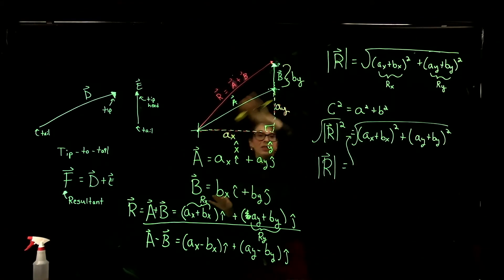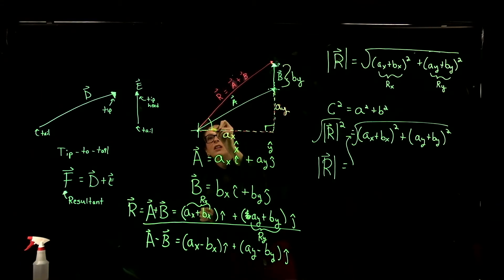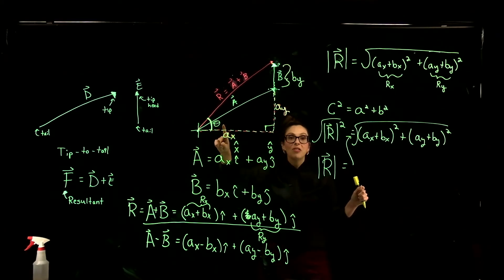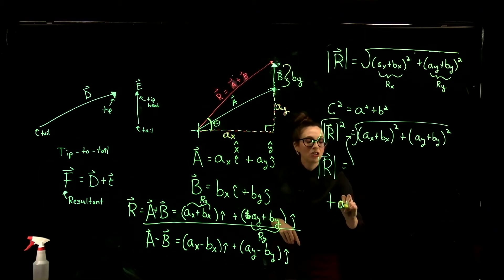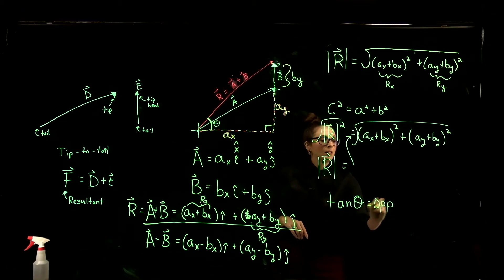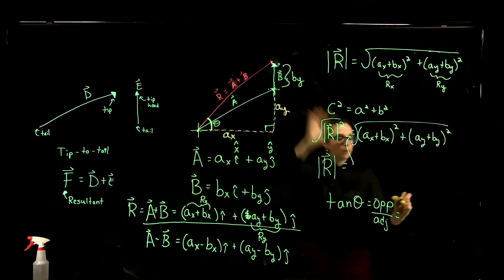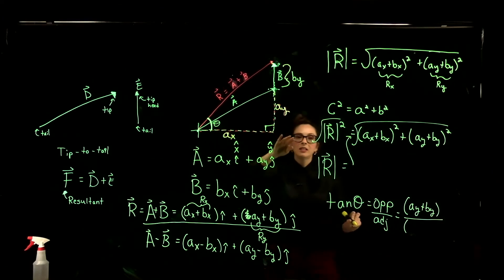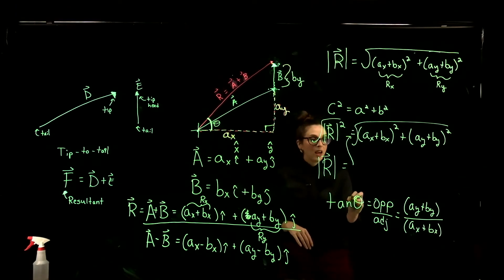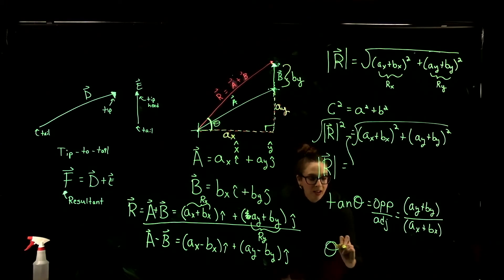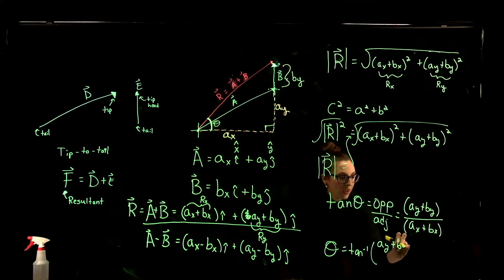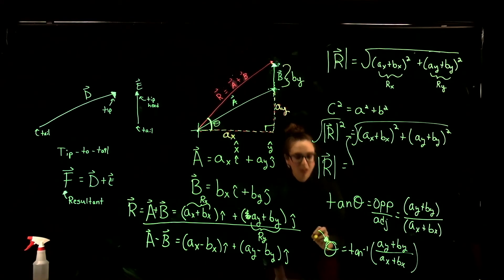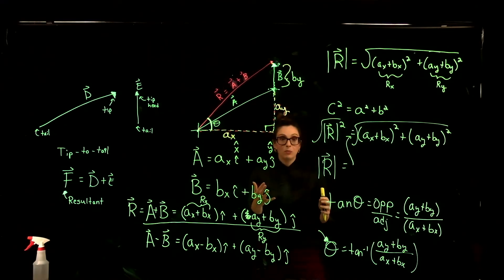That gives us the magnitude of this vector. To find the angle theta that the vector makes with respect to the positive x-axis, we use tangent: tan(θ) = opposite/adjacent = (Ay + By)/(Ax + Bx). To isolate theta, take the inverse tangent: θ = tan⁻¹[(Ay + By)/(Ax + Bx)]. I'll always ask for this angle in degrees, so make sure your calculator is in degree mode.